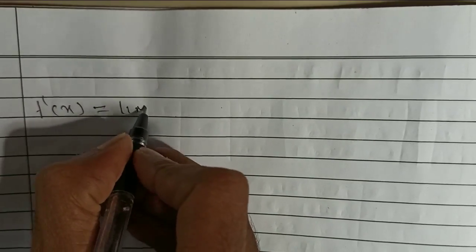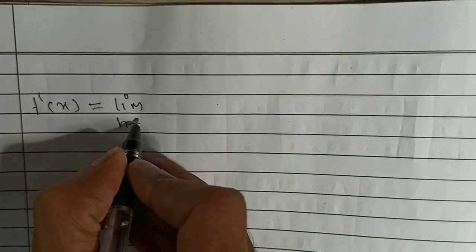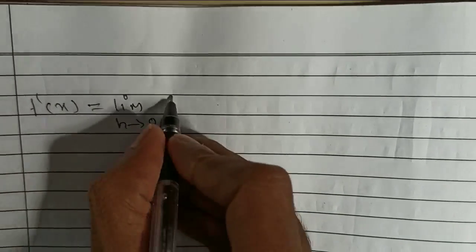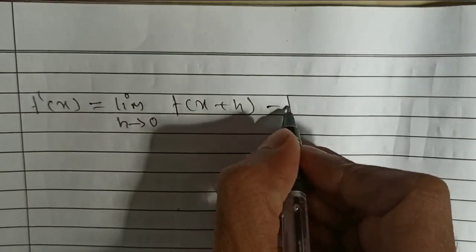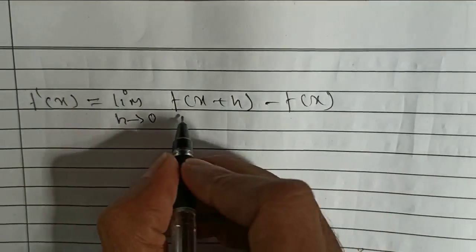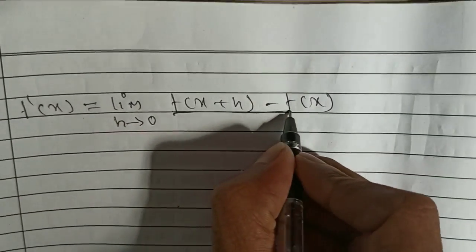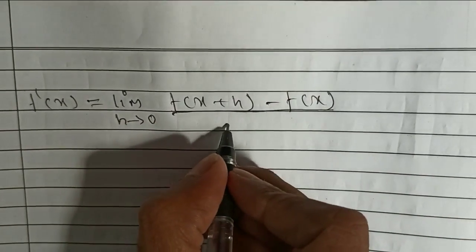Here see from first principle we have f'(x) is equal to limit h tends to 0, f of x plus h minus f of x divided by h.